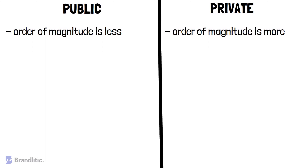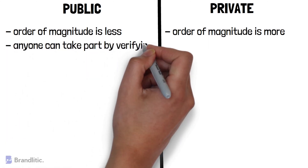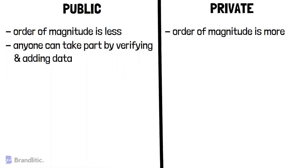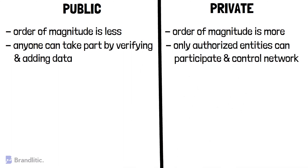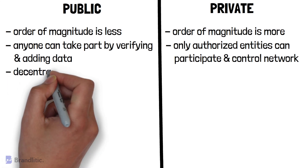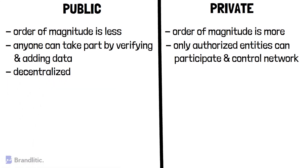In public blockchain, anyone can take part by verifying and adding data to the blockchain, whereas in private blockchains, only authorized entities can participate and control the network. Further, a public blockchain is decentralized, whereas a private blockchain is more centralized.